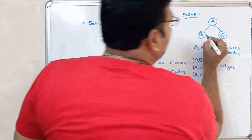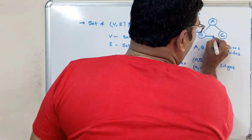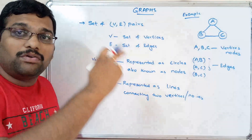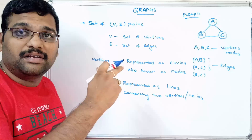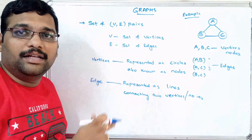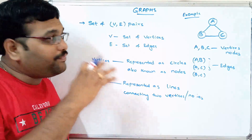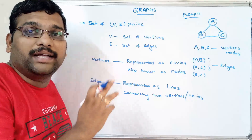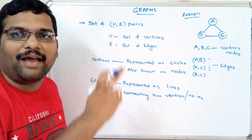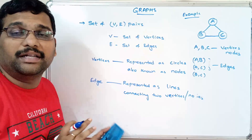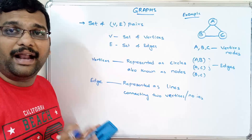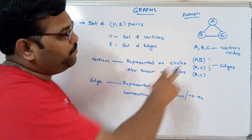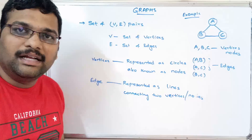If you have an edge between B and C, it forms a closed loop — a cycle. If it forms a cycle, it cannot be called a tree; it is a graph. That's the only difference between a tree and a graph.